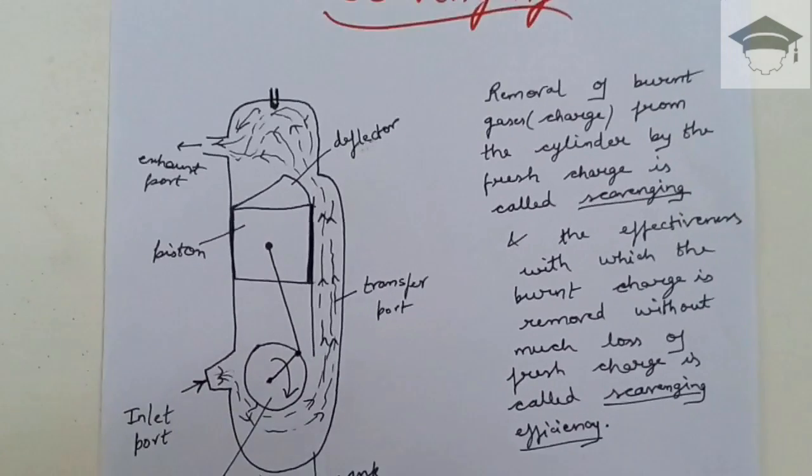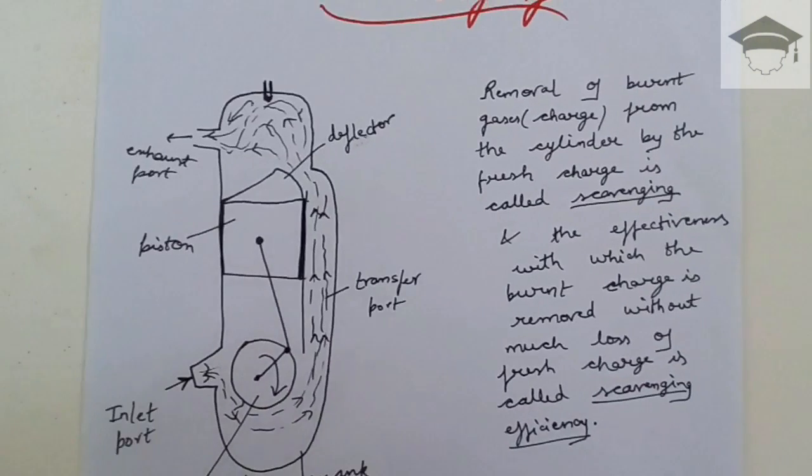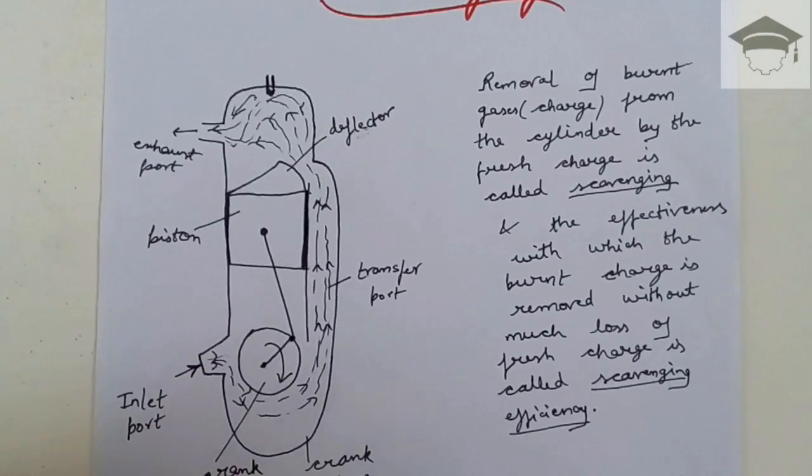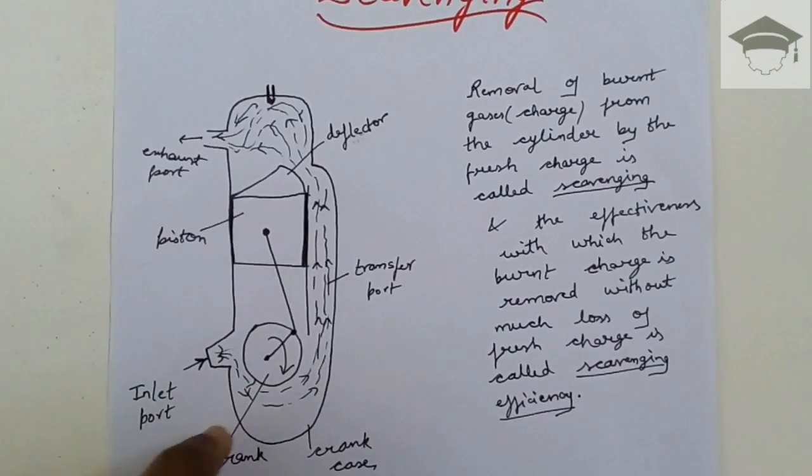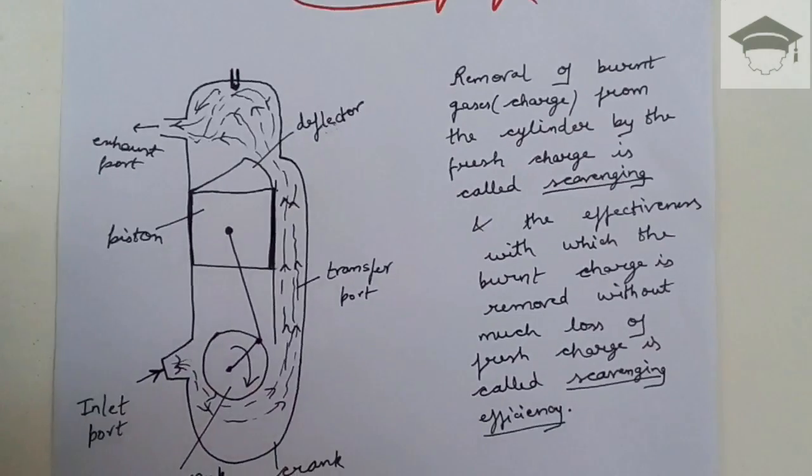In two-stroke petrol engines, scavenging efficiency is lower because the inlet charge contains petrol plus air. If more inlet charge is lost from the exhaust port while scavenging, more petrol will be consumed.